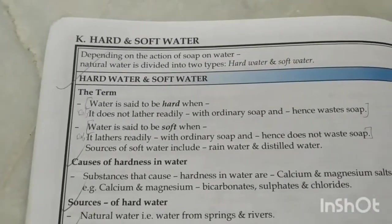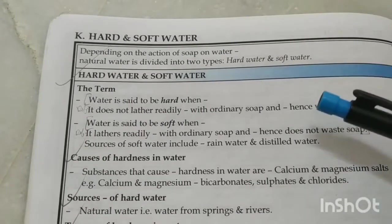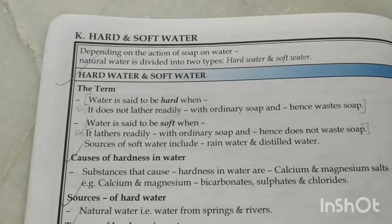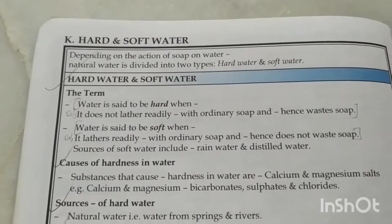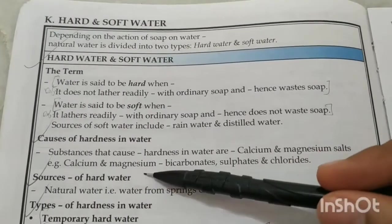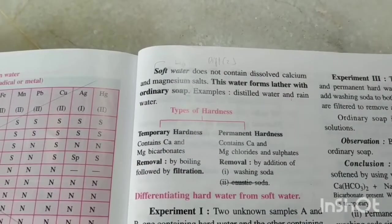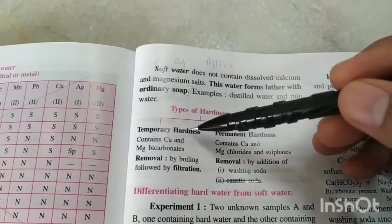Let's talk about hard water and soft water. Water is said to be hard when it does not lather readily with ordinary soap — no foam is created, which is wasteful for washing clothes. Water that does lather readily is called soft water; rain water is an example of soft water. The cause of hardness is the presence of calcium and magnesium bicarbonates, sulfates, and chlorides.